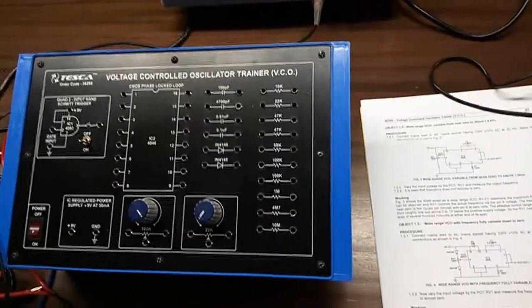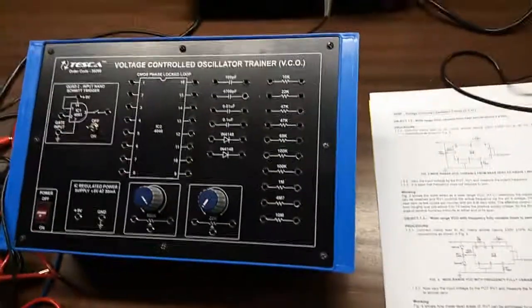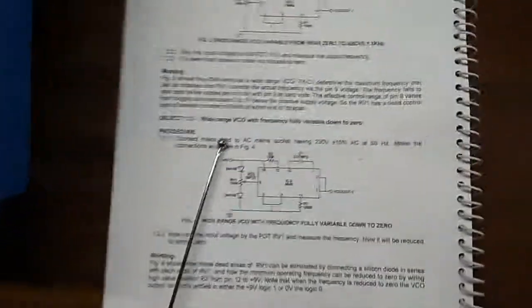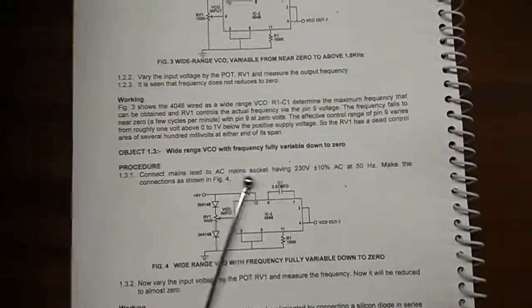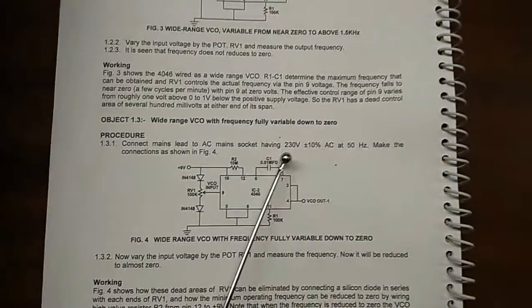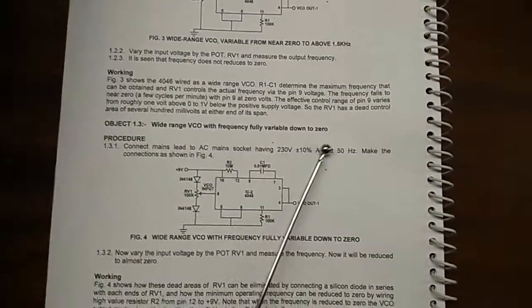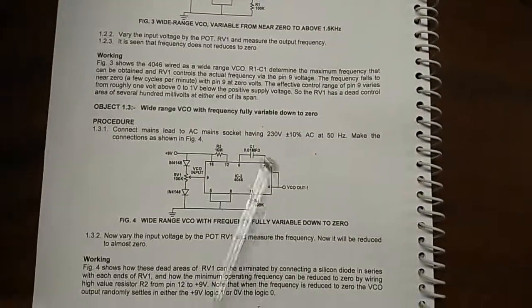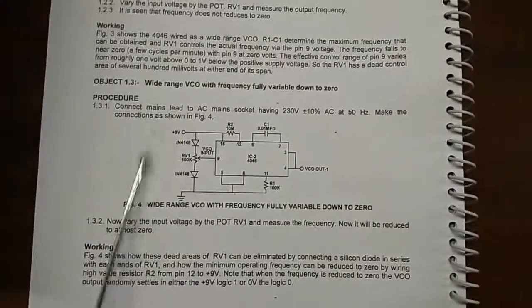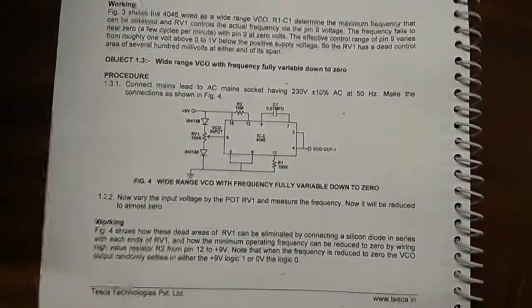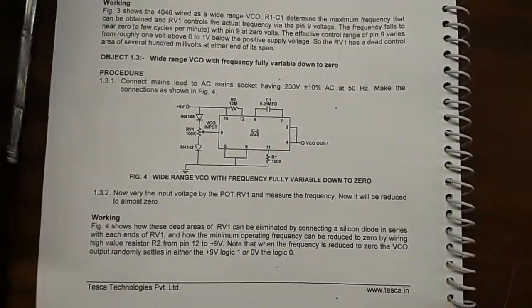It is seen that frequency does not reduce to 0. Our next experiment is to observe the wide range VCO with frequency fully variable down to 0. This is the connection that we need to build for this experiment.